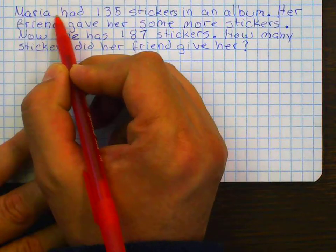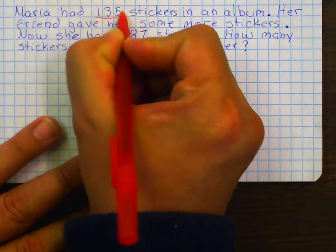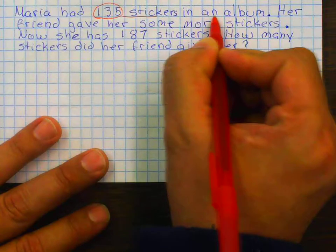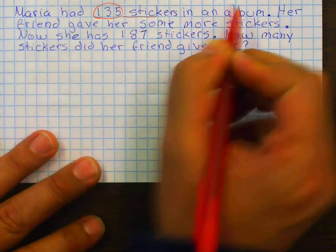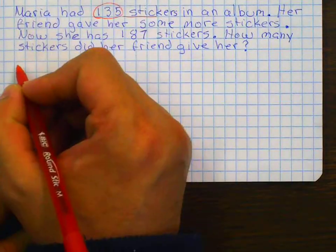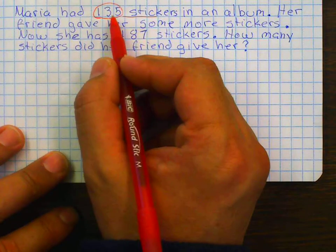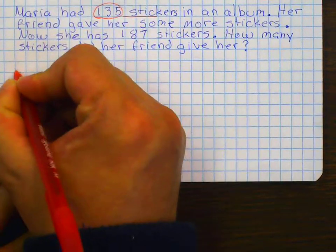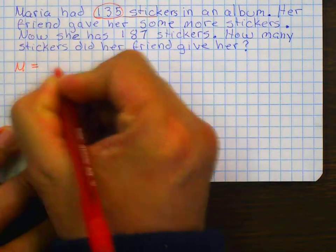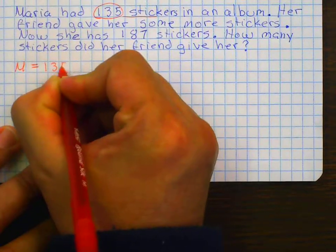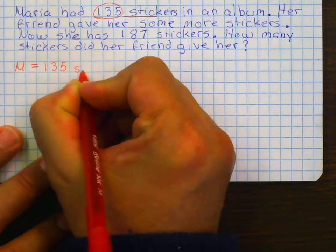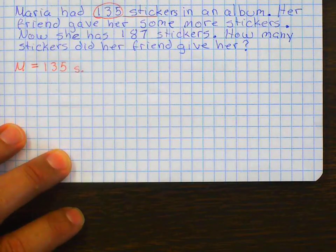So first sentence is, Maria had 135 stickers in an album. What did she have? Stickers. So Maria had 135 stickers. Okay, great. First sentence, done.